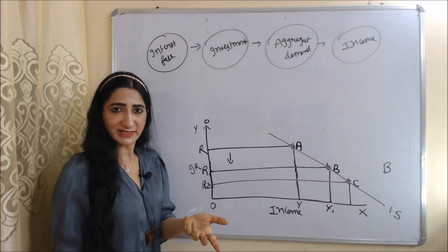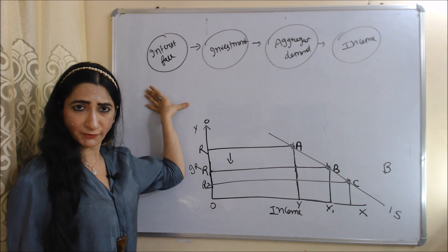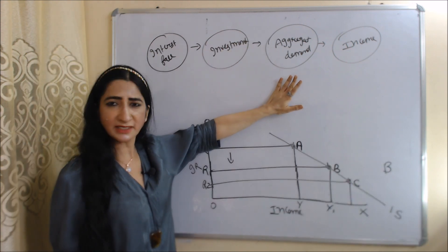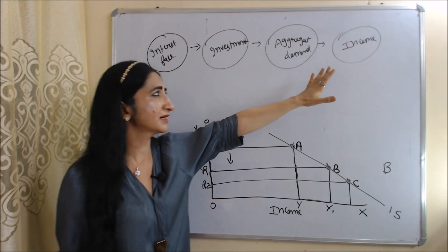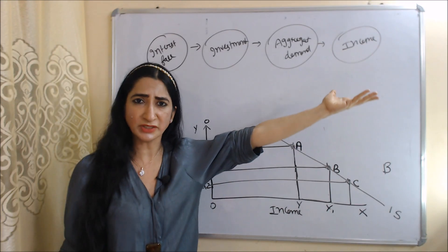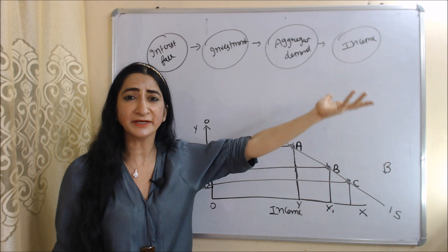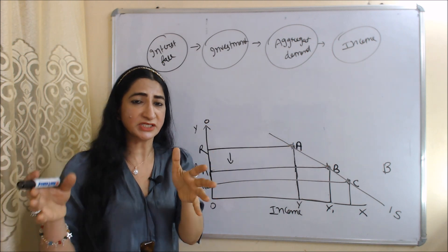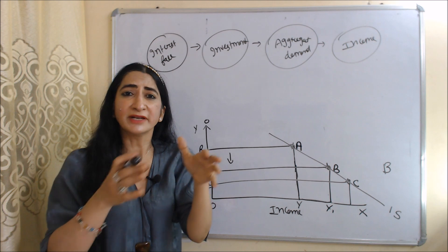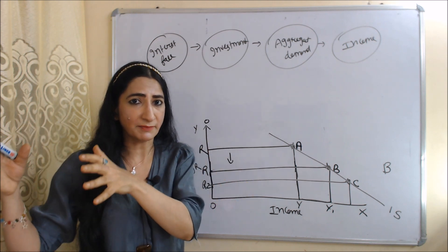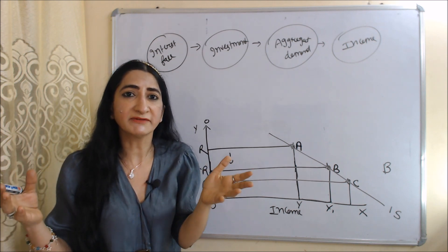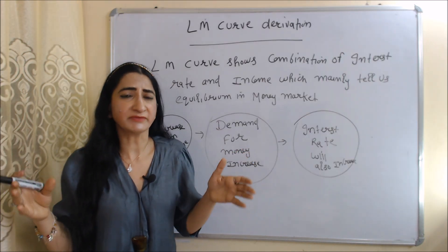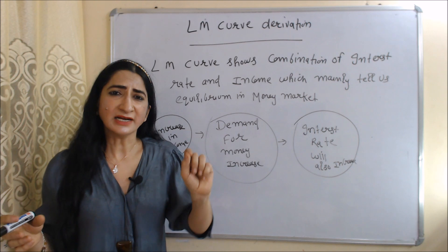The process of equilibrium on the IS curve is: initially, interest rate falls, as a result investment increases; when investment increases, aggregate demand increases; when aggregate demand increases, aggregate supply also increases or equivalently income also increases; and ultimately we achieve equilibrium where aggregate demand is equal to aggregate supply — this is called equilibrium in the goods market.